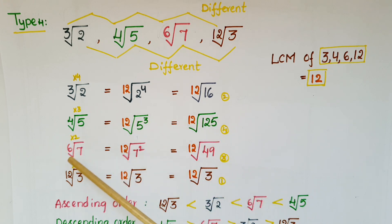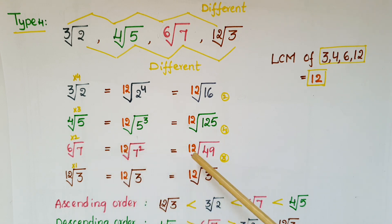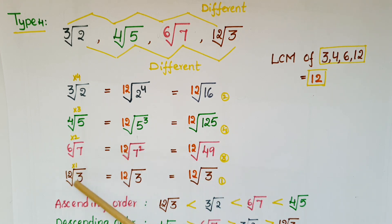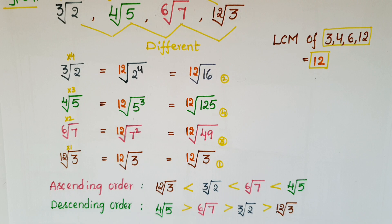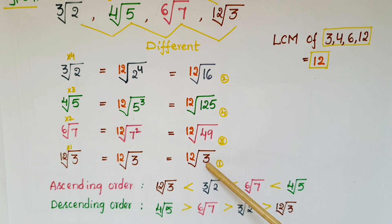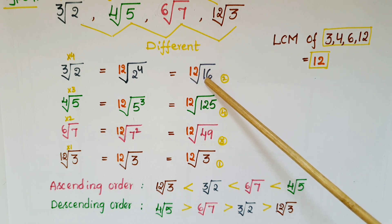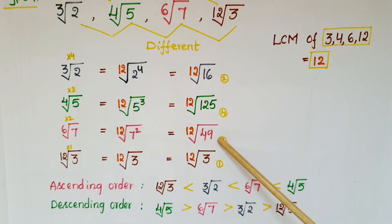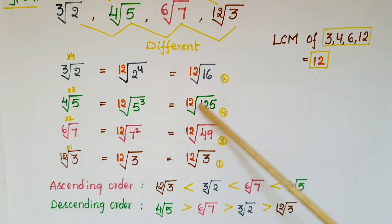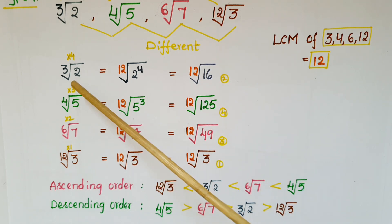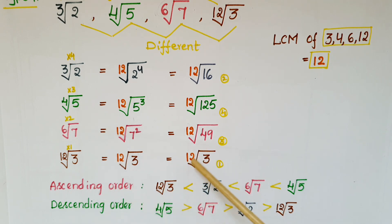Sixth root of 7: since 6 times 2 equals 12, raise the power of 7 to 2, giving 12th root of 7 squared, which equals 12th root of 49. Twelfth root of 3: since 12 times 1 equals 12, no change in power, so it stays as 12th root of 3. Now all roots are the same — 12th root. Find the largest number: that is 125, and the smallest is 3. So first is 12th root of 3, second smallest is 12th root of 16.